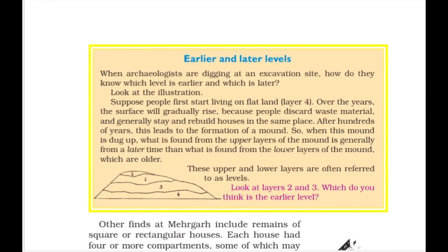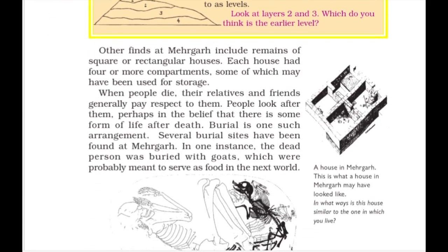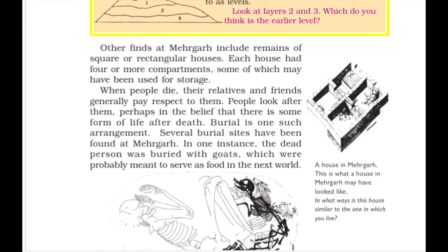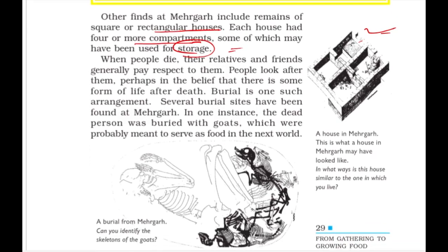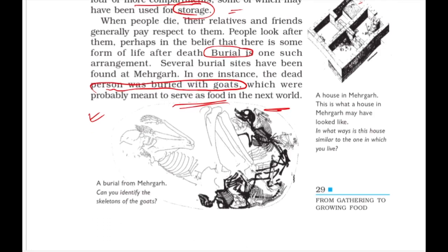History is excavated in layers — what is deeper is earlier, what is above is later. Mehergarh is a very important Neolithic site. The information here tells us that Mehergarh had square or rectangular houses made of four or more compartments, also used for storage. Burial was an important practice — people were buried with goats to serve as food in the next world. A skeleton of a man with two goat skeletons beside him illustrates this belief in afterlife.